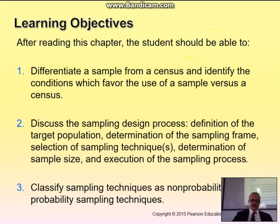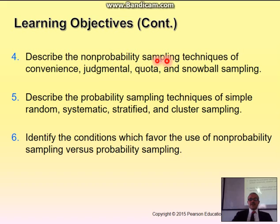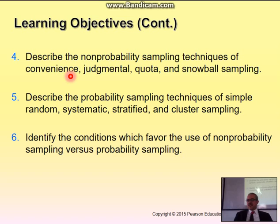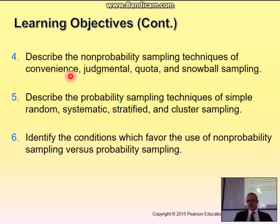You want to describe non-probability sampling techniques such as convenience sampling. Convenience sampling is when you go and choose people at your convenience — maybe you talk to your friends. That's very easy, but are your friends representative of the whole population? If you're studying telecommunications and the population is 5 million mobile users, but your sample of 400 is only your family, that's not a good representation. That's what we call convenience sampling.